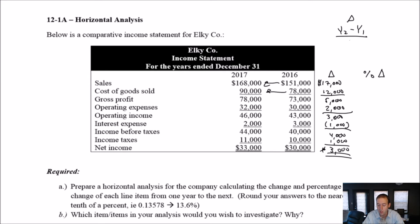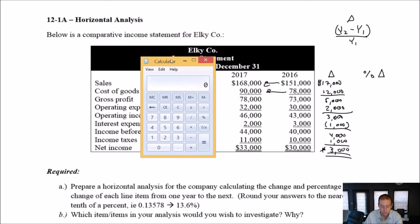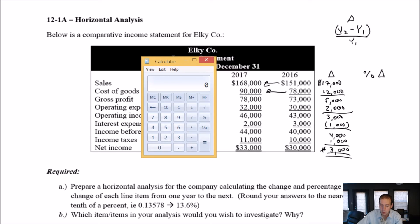So in this case, it's divided by year one. We're going to take that change, 17 grand, and divide it by the number in the earlier year. So that's all you need to do to compute a percentage change. For sales, it's going to be 17,000 divided by the earlier year, and the earlier year here was 151. So our sales grew by 11.3%.